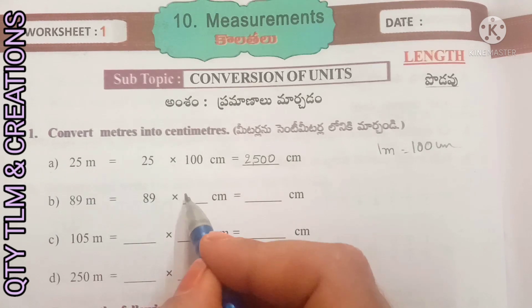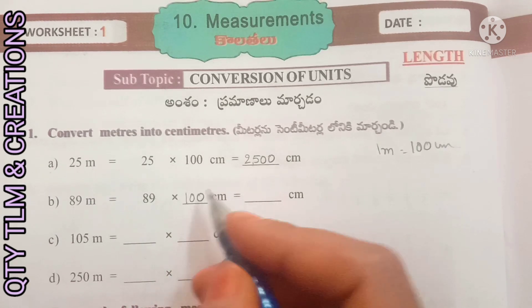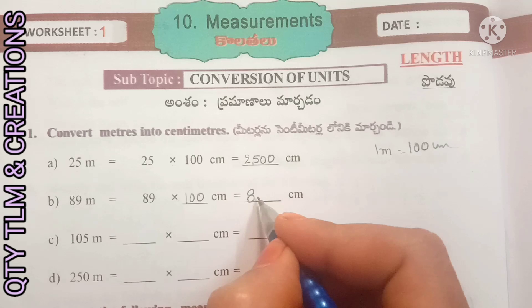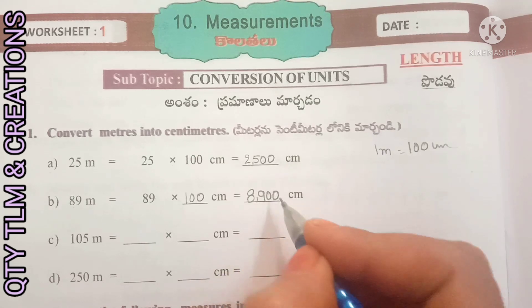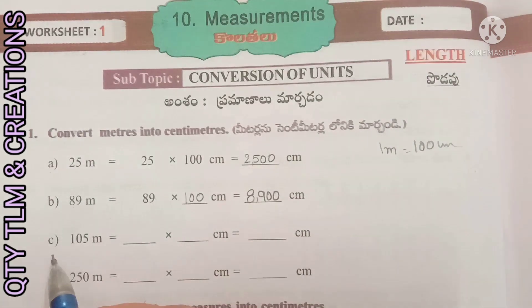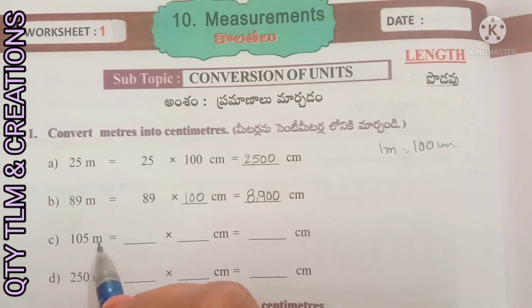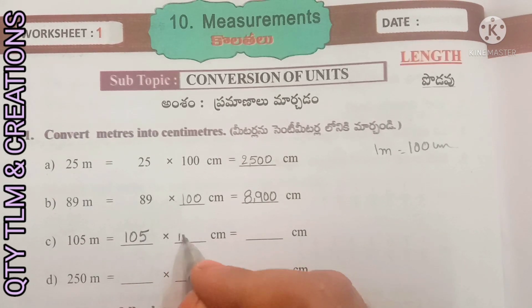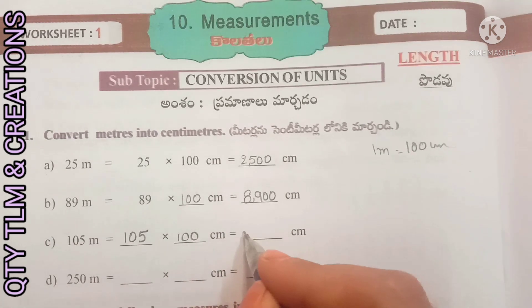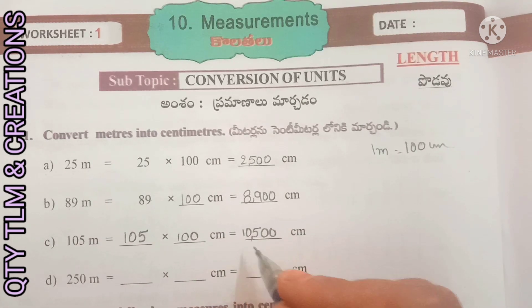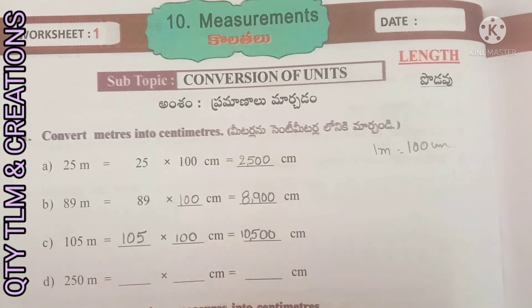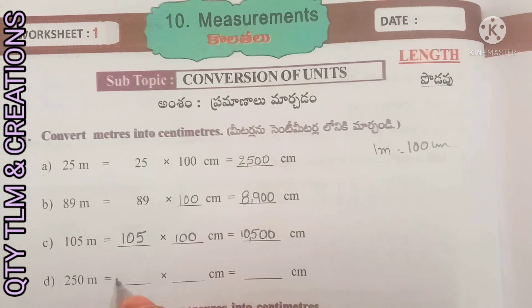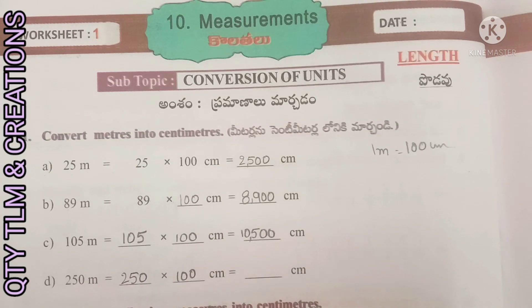Next, 105 meters: 105 meters into one hundred centimeters equals 10,500 centimeters. Next, 250 meters: 250 meters into one hundred centimeters equals 25,000 centimeters.